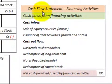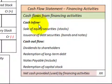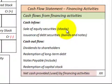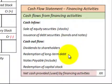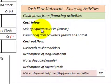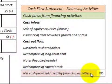Looking at our cash flow statement for financing activities: our cash inflows would be from the sale of equity securities — that would be stocks — and the issuance of debt securities, bonds and notes. Our cash outflows would be dividends to shareholders, redemption of long-term debt, or redemption of capital stock. We then look at the difference between our cash inflows and cash outflows to get our net cash provided or used by financing activities.